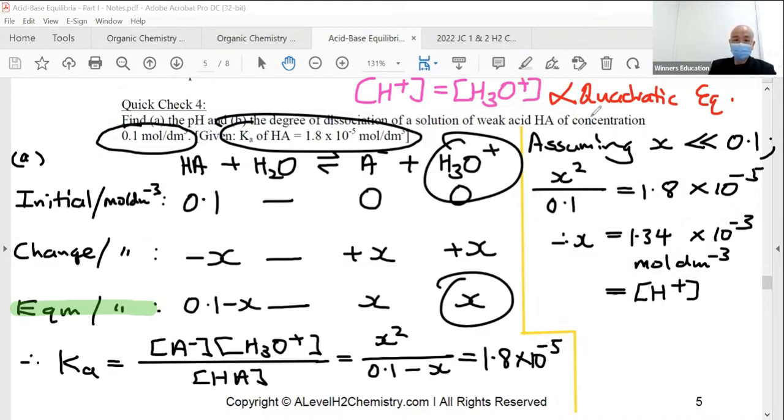And from there, therefore, you can calculate the pH. Sub it in. I think you get a 2.87. So the first part, we have calculated it.